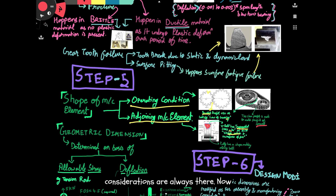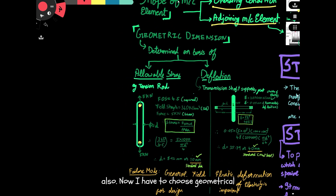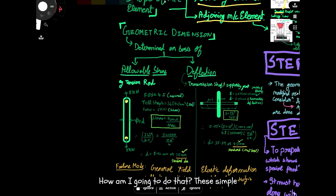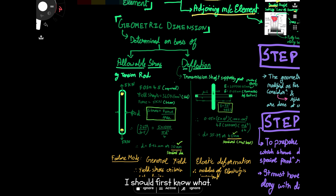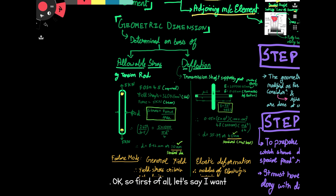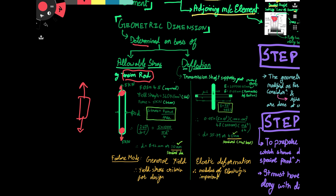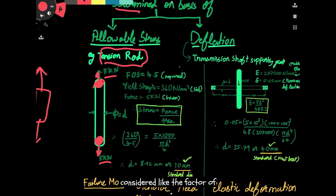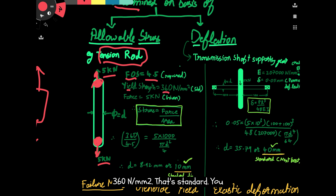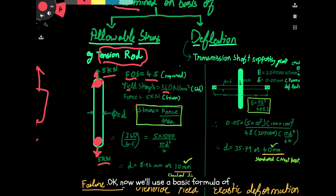Now let's talk in mathematical terms about choosing geometrical dimensions. To determine dimensions based on allowable stress, consider a tension rod — a rod subjected to a tensile force. There is a hook at each end and it's stretched with a force of 5 kilonewtons. The factor of safety is 4.5, the yield strength is 360 N/mm², and the force is 5 kilonewtons.